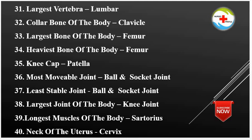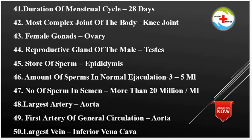Largest Joint of the Body: Knee Joint. Longest Muscle of the Body: Sartorius. Neck of the Uterus: Cervix. Duration of Menstrual Cycle: 28 Days. Most Complex Joint of the Body: Knee Joint. Female Gonads: Ovary.